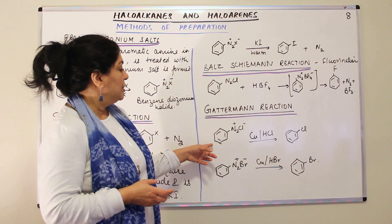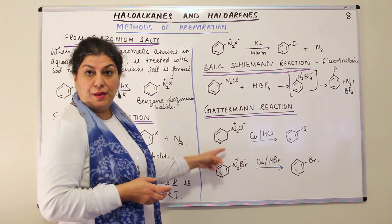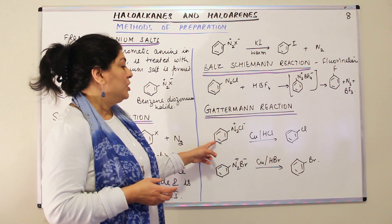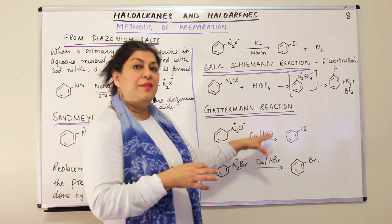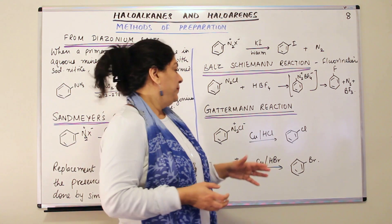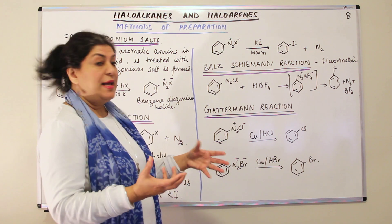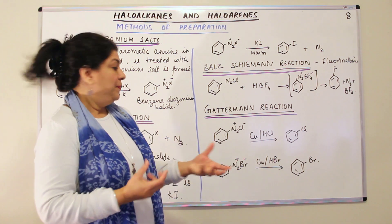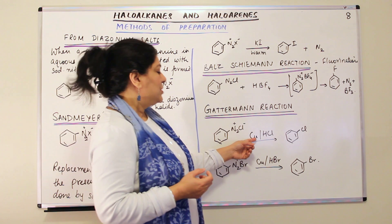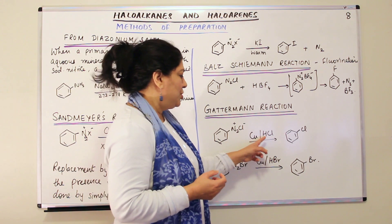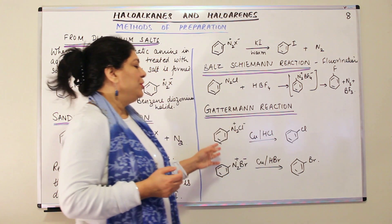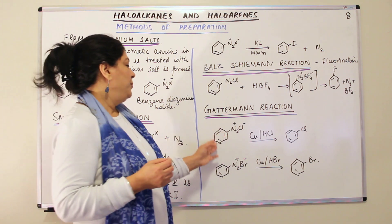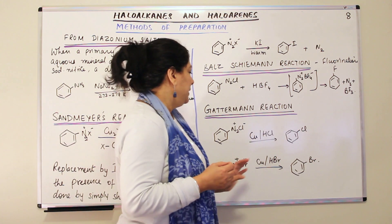In Gattermann reaction, you have the benzene diazonium salt, and you make it react with copper in the presence of an acid, or in the presence of a mineral acid, and that halo acid. So if you make it react simply with copper in the presence of HCl, it is this chlorine which will be used to substitute. So you will get chlorobenzene here.